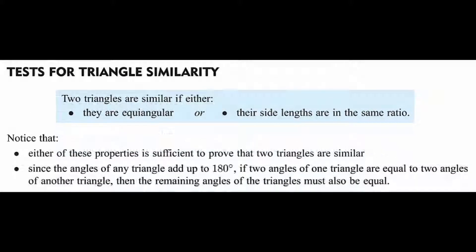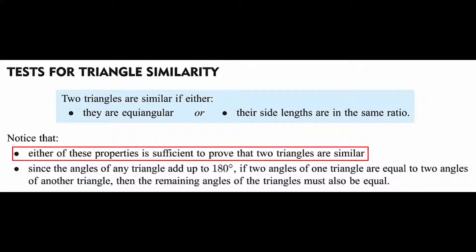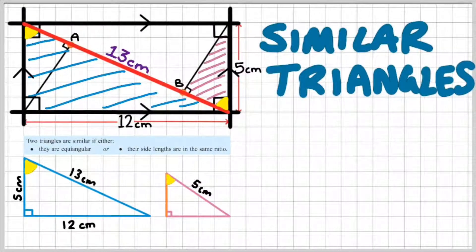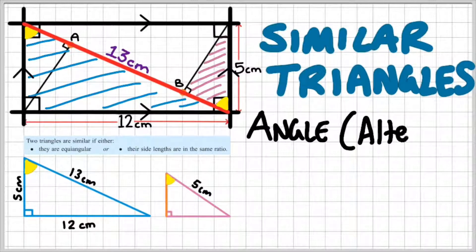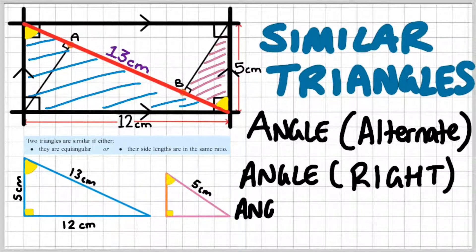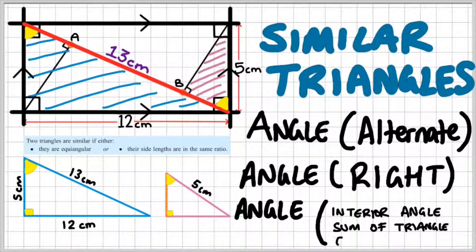To test for triangle similarity, two triangles are similar if either they are equiangular or their side lengths are in the same ratio — either property is sufficient. Since the angles of any triangle add up to 180 degrees, if two angles of one triangle equal two angles of another, the remaining angles must also be equal. One set of angles is alternate and the other pair is 90 degrees, so the third angle will be the same since interior angles of a triangle equal 180 degrees.